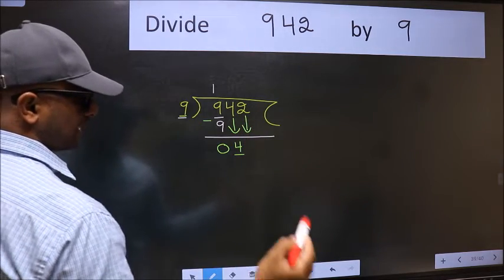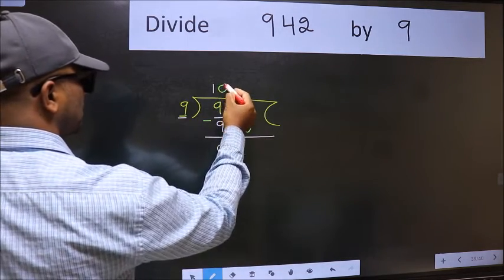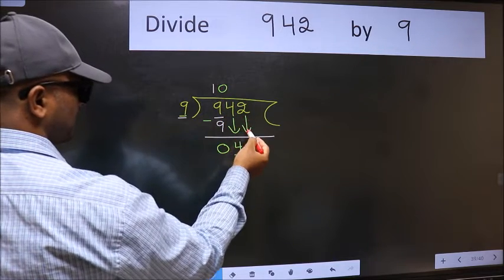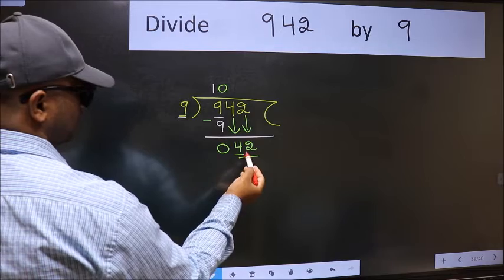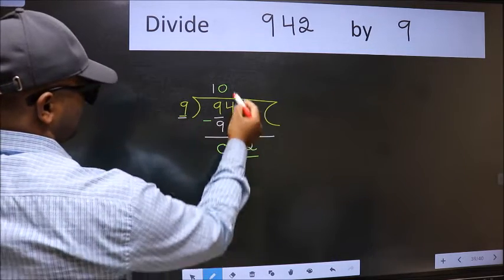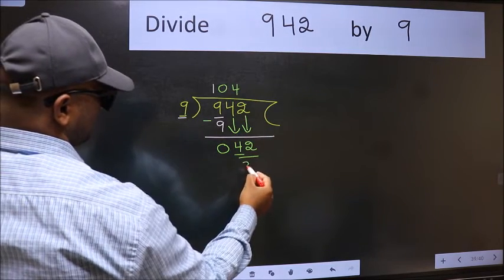And the rule to bring down the second number is we should put 0 here. Then only we can bring this number down. Now 42. A number close to 42 in the 9 table is 9 fours, 36.